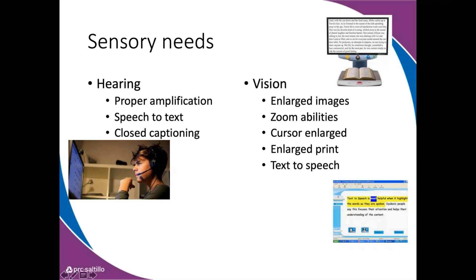For the visually impaired, we'll need the ability to enlarge images, cursor size, print, and text-to-speech output. The device or SGD needs to have significant customization available with cell sizes and related features. Their technology — before even considering AAC — needs to be ready and available for these sensory needs. That requires more organization on your end and careful pre-session planning.